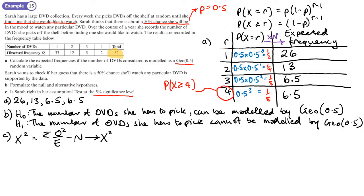So if we do that, no cells need to be combined because we haven't got any expected frequencies less than 5. So that's going to be 33 squared over 26, plus 12 squared over 13, plus 5 squared over 6.5, plus 2 squared over 6.5, minus the number of observations, 52.